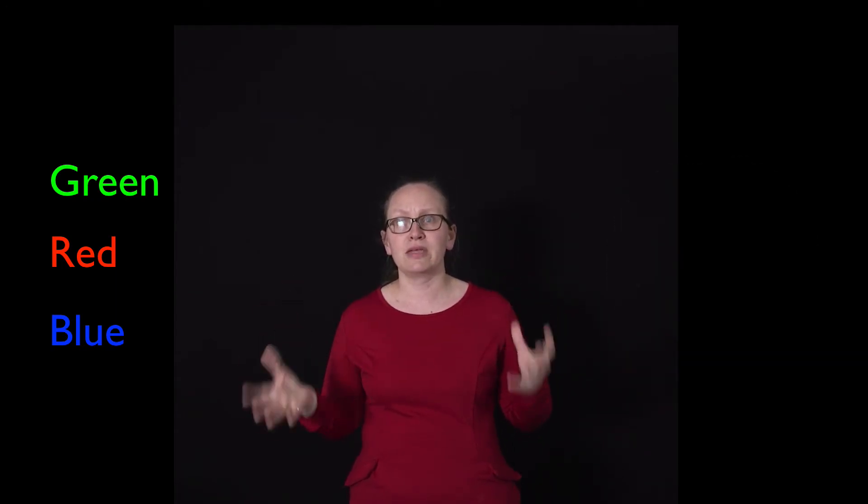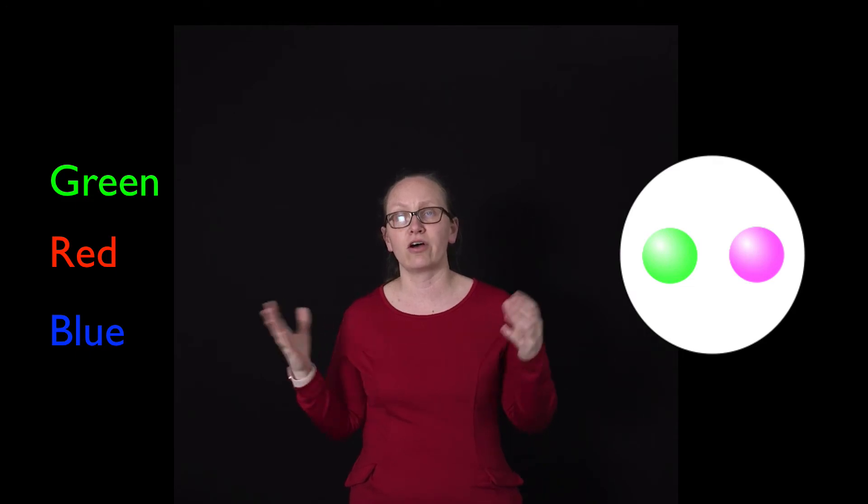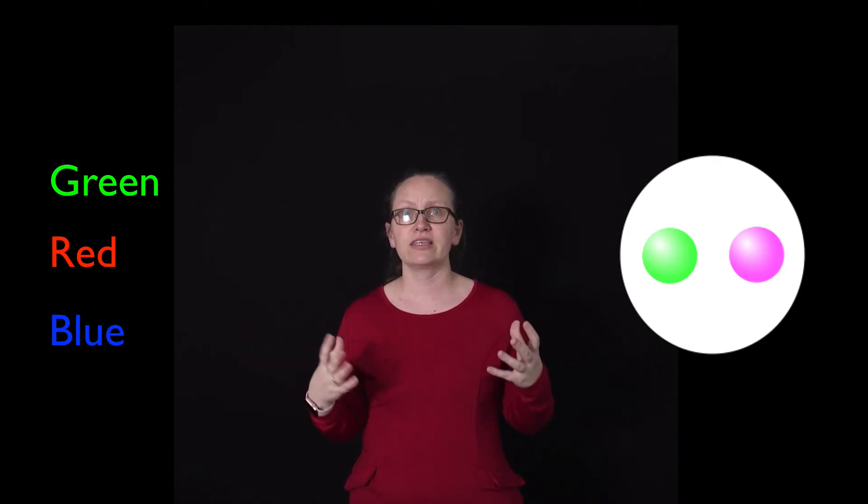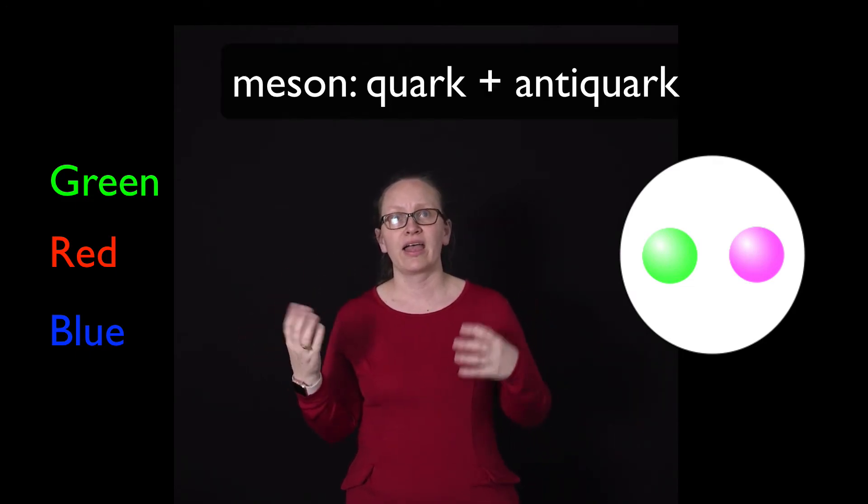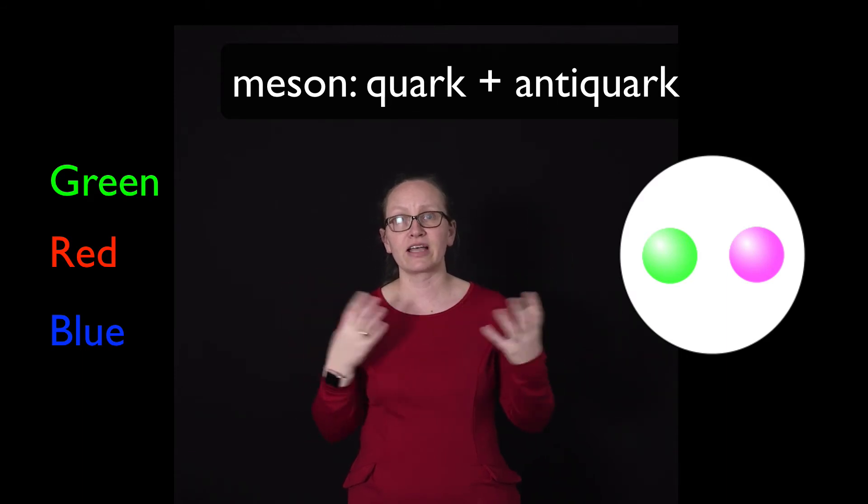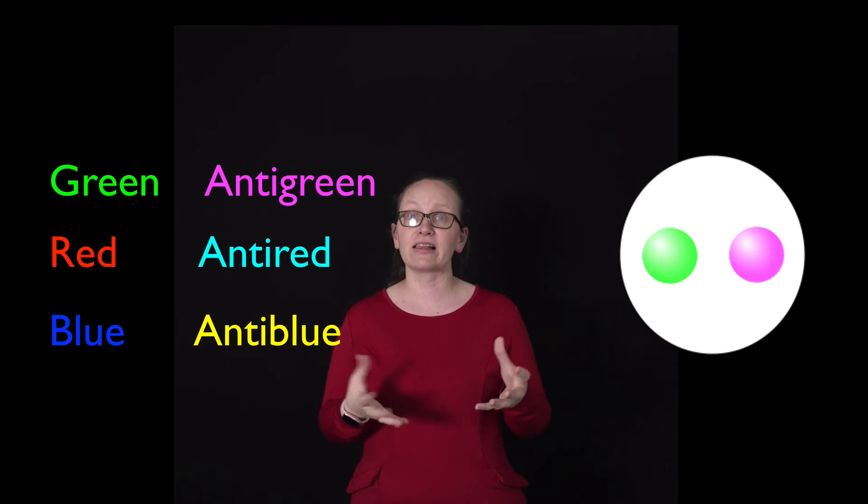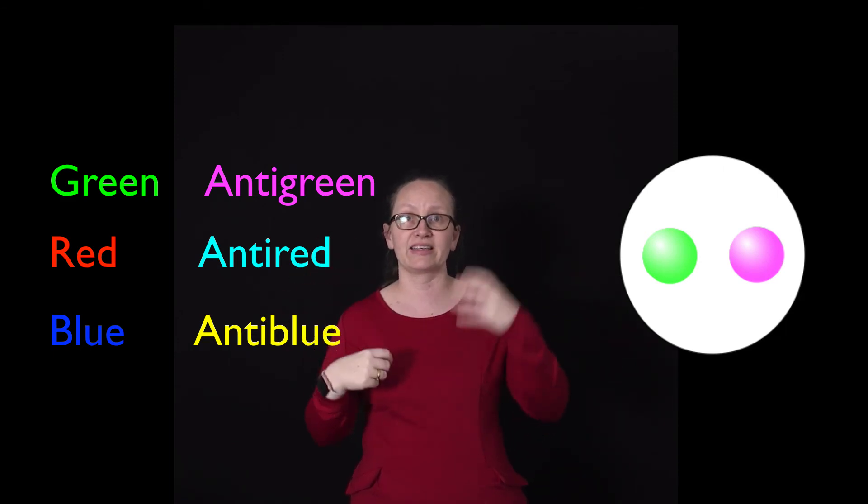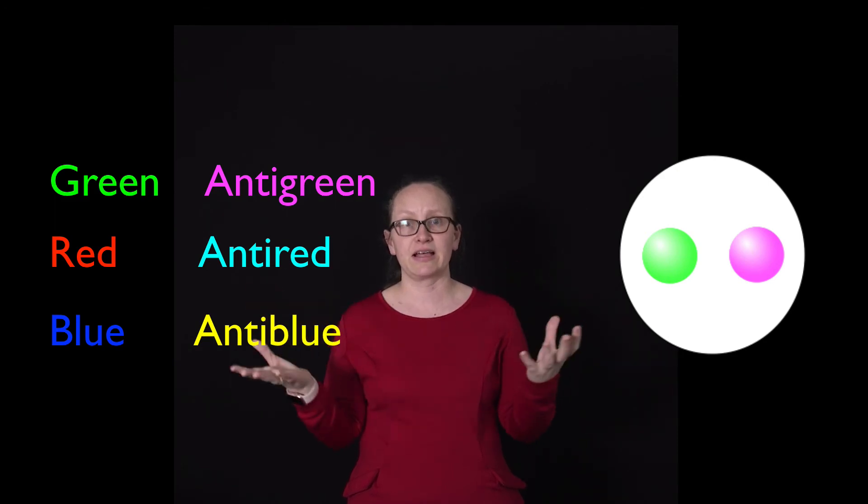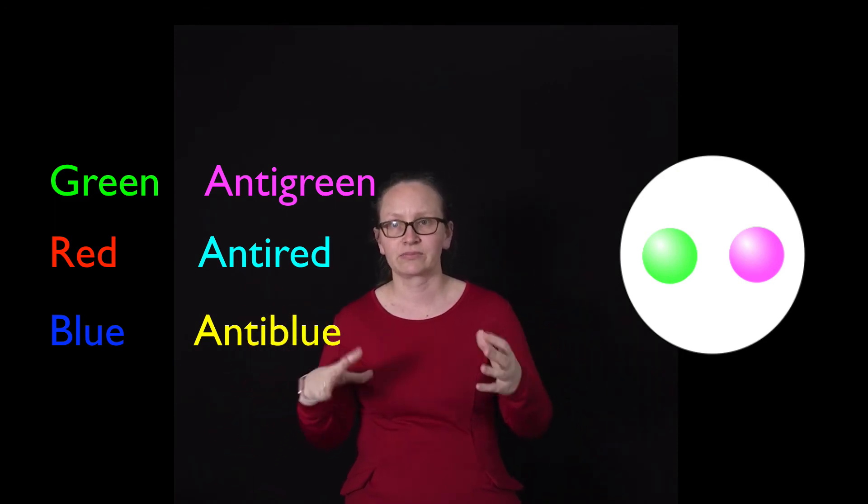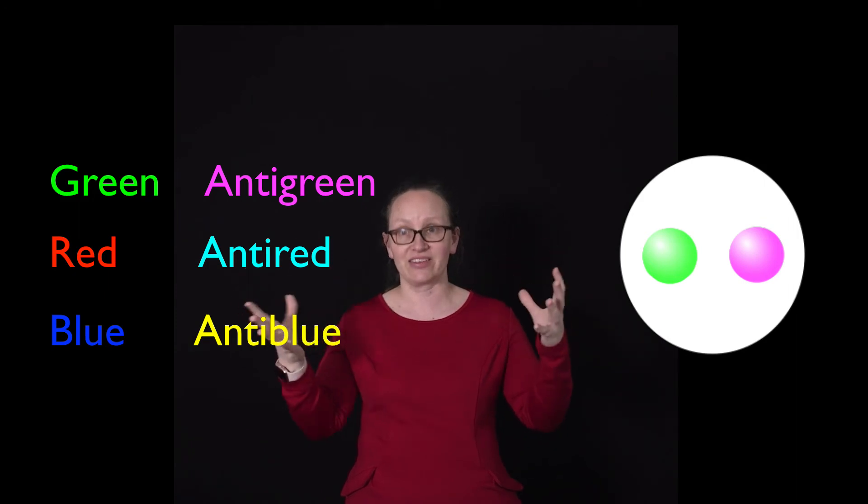We can also build mesons, which consist of two quarks. In this case, we always have a quark and an anti-quark, because color also comes in anti-color. Once again, we have to have color, so we could have a blue quark and an anti-blue quark, and when we combine these two together, we end up with a colorless meson.